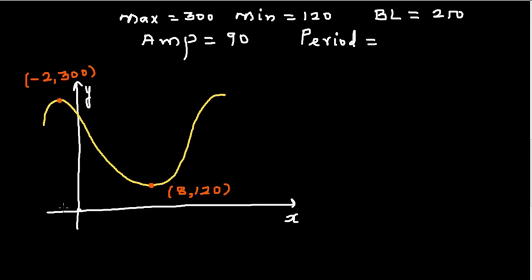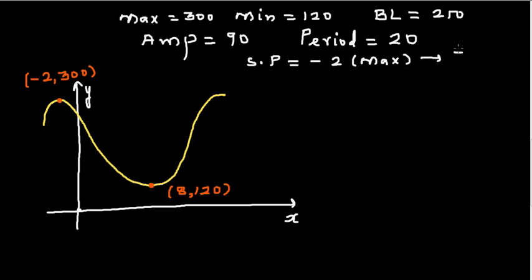The distance from maximum to minimum is 10, which is half the period, so the full period is 20. If we start at x = −2, that's the maximum, giving a positive cosine graph. If we start at x = 8, that's the minimum, giving a negative cosine graph.